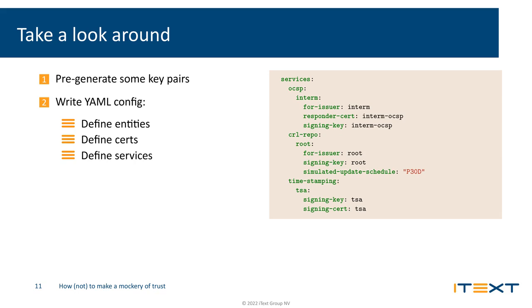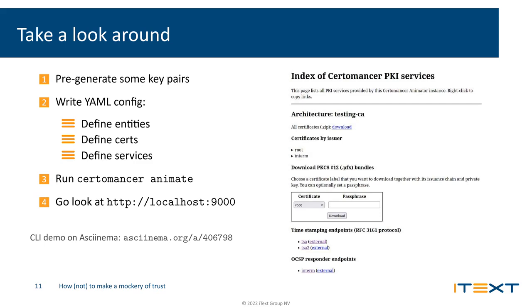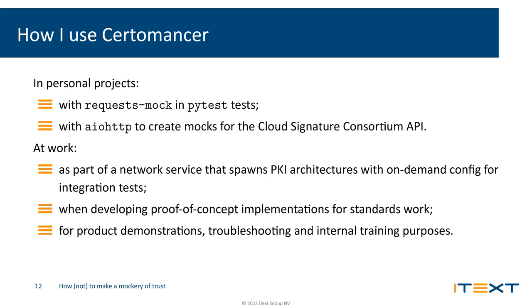To see all of that in action, you can run the Certimanager animate command and then point your browser to the running instance. From that very primitive web UI, you can interface with the virtual PKI environment you just created. If you want to see a more extensive demo of the command line interface, there is one available on Asciinema, also linked from the project's GitHub page. I've personally gotten quite a bit of mileage out of Certimanager both in my personal projects and at work — for integration tests of various kinds, and also to couple together a mock server implementation for the Cloud Signature Consortium API. Outside testing, it's also really convenient for demonstrations, proof-of-concept implementations, troubleshooting, internal training, and all sorts of situations where being able to make a mockery of trust is pretty useful.